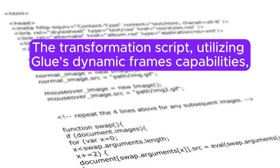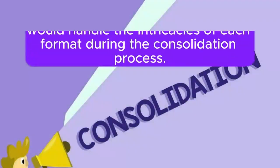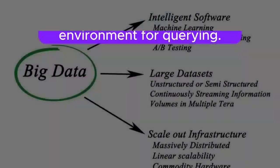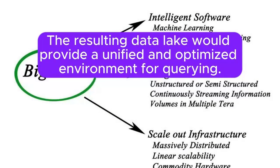The transformation script, utilizing Glue's dynamic frames capabilities, would handle the intricacies of each format during the consolidation process. The resulting data lake would provide a unified and optimized environment for querying.